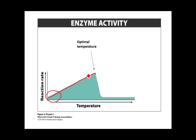The optimal temperature depends on the enzyme. Enzymes are adapted to work under the conditions where they're normally found. For humans, most enzymes work best at body temperature. But for an archaeon living in a hot spring at 250°F, that's where its enzymes work best. So the optimal temperature is not the same for all enzymes — it depends on which enzyme you're talking about. At the optimal temperature, the reaction rate is highest.